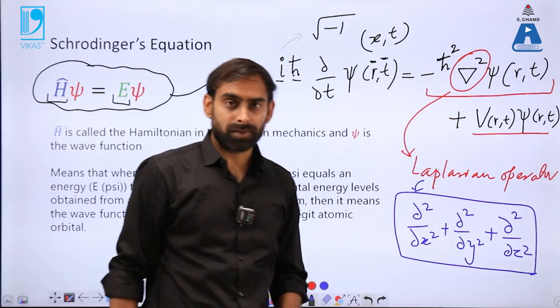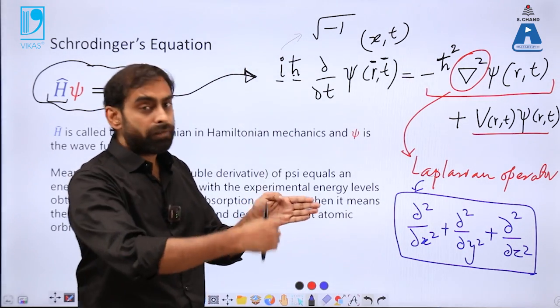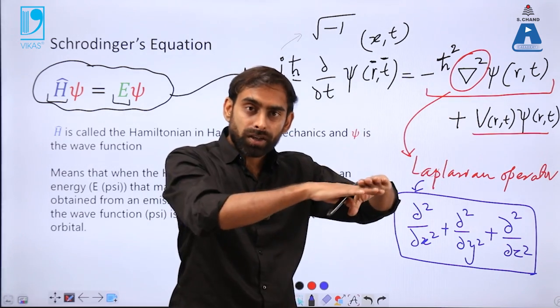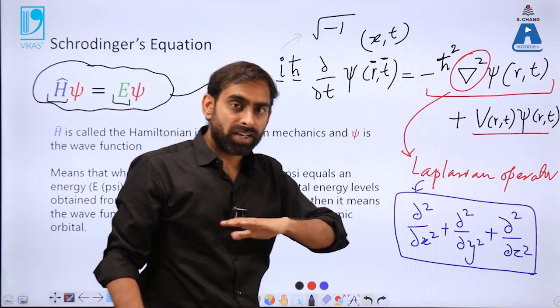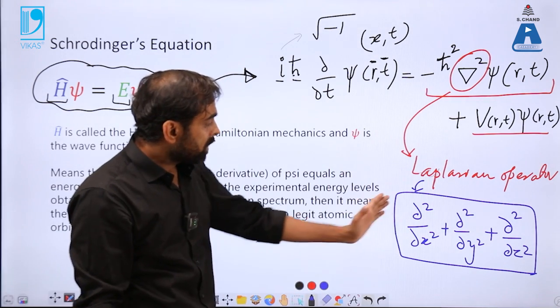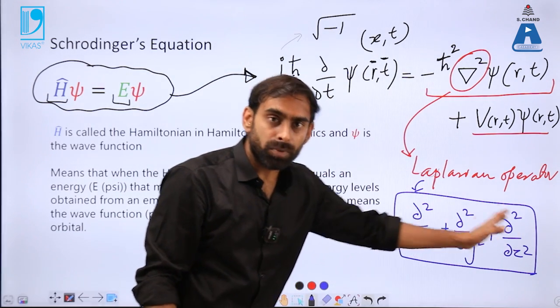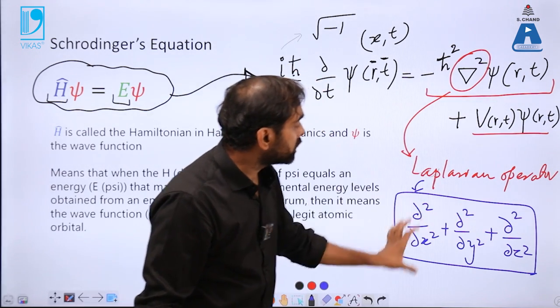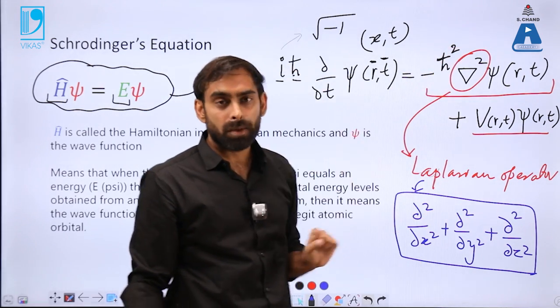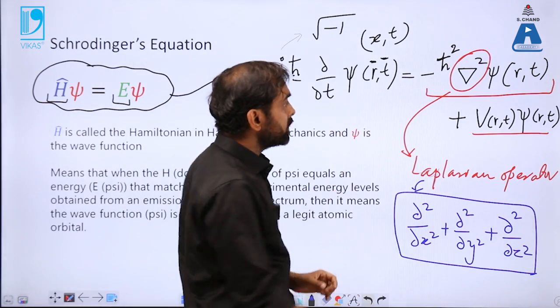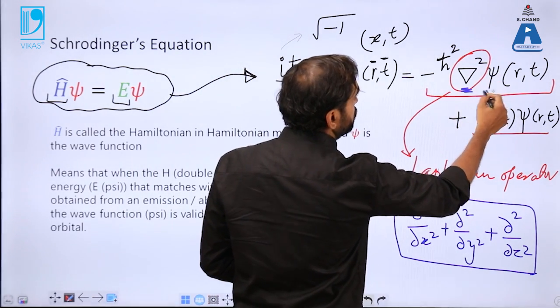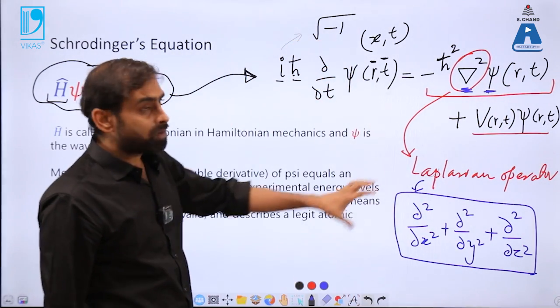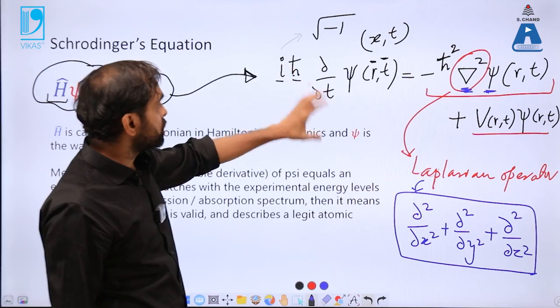When you are defining an electron wave, that wave can be defined in three-dimensional space by taking x-axis, y-axis, and z-axis. And the second-order differential component of each axis—x, y, and z—when added together, they give rise to this Laplacian operator, which can be replaced here and multiplied to wave function.